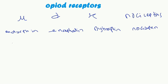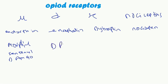What are the agonists of these receptors? For mu, we have morphine, fentanyl, and DAMGO — DAMGO is a synthetic opiate. For delta, we have DPDPE and deltorphin.